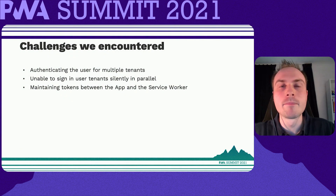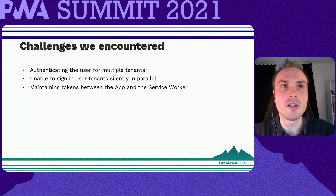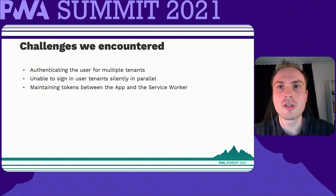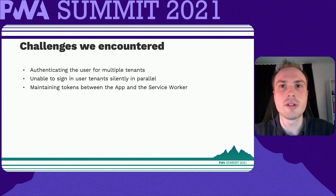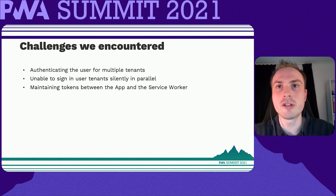Let's talk about how we implemented authentication. When we first started the project, our users had to be authenticated per tenant. While this might not be an issue when the user is online — you can always request new tokens on demand — it becomes an issue when the user is offline and wants to switch between tenants. Another challenge was signing these users in silently in parallel, but due to a limitation of the library, we were unable to do so. Our initial solution was to loop over the user's tenants in an initialization page and sign in users silently one by one.